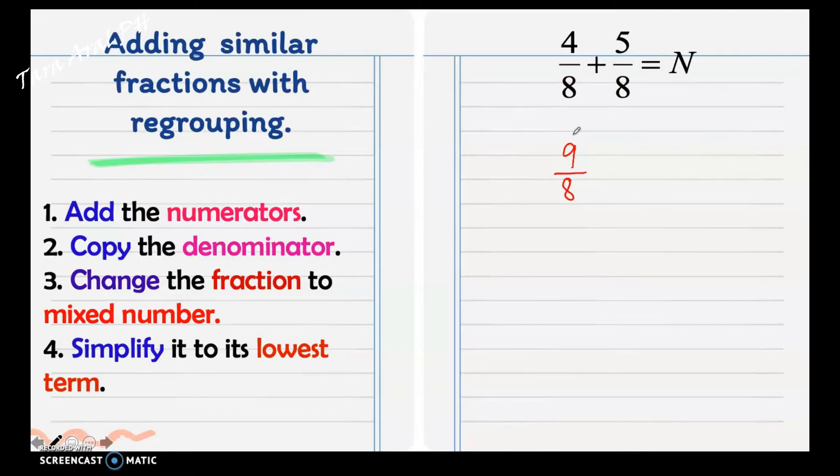Next step is to change the fraction to mixed number. An improper fraction can be reduced to a mixed number or a whole number by dividing the numerator by the denominator and writing the fractional part in lowest term. So, we have 9 divided by 8, that is 1, with remainder 1. So, we have our quotient is our new whole number, and the remainder is our numerator. Then, the divisor is our denominator, or just copy the 8 as the denominator. Simplify to its lowest term. There is no common factor between 1 and 8 other than 1. Then, this is our final answer. We regroup when our answer is in an improper fraction.